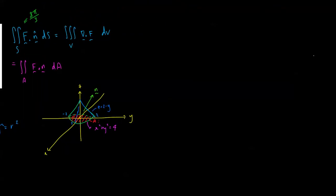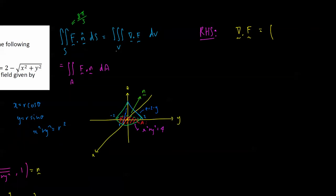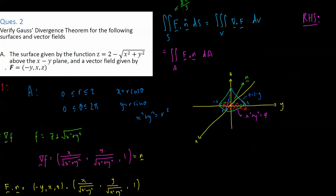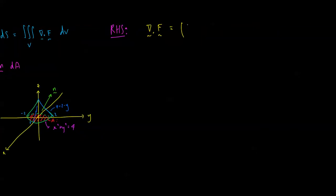Now let's work out the right-hand side. We need to find the divergence of F. We always do this first because it could be zero, saving us the effort of finding the volume parameters. The divergence, grad · F, applied to F = (−y, x, z): the partial of −y with respect to x is 0, the partial of x with respect to y is 0, and the partial of z with respect to z is 1. So grad · F equals 1.